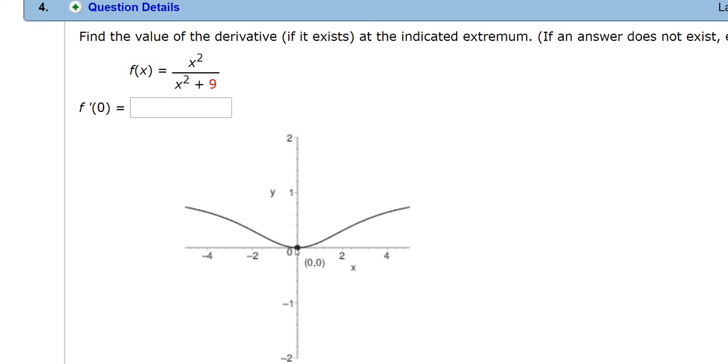It also happens to be something called an absolute minimum because it's the smallest y value. So an absolute minimum is the smallest y value, and a relative minimum is a y value that is smaller than the points around it.